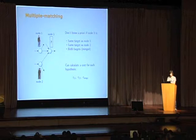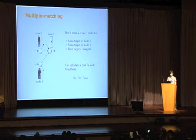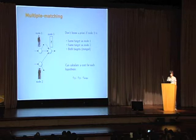This is a possible merge situation with two nodes that may merge into a third. So there are three hypotheses. The first is that the third node is the same target as node one. The other is that it's the same target as node two. And finally, the extra hypothesis is that both targets merge into a single node.